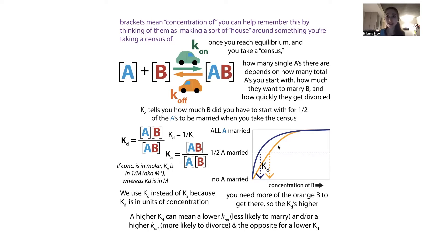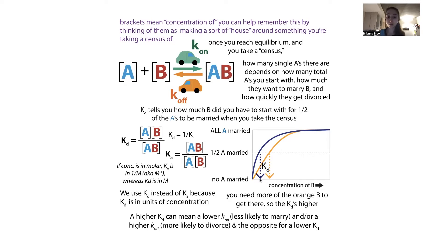If we were to graph this, there's going to be a concentration at which half of the partner is bound, if you look in terms of the concentration of the other partner. This value is going to equal the Kd when you are in the right binding regime and you're looking at total A or total B. So let me go into this in a little more detail.